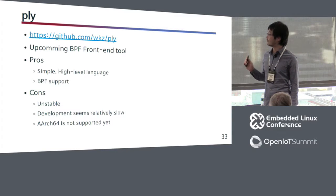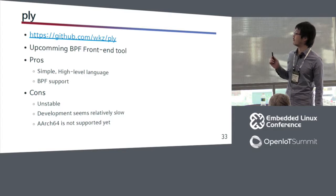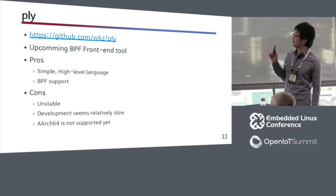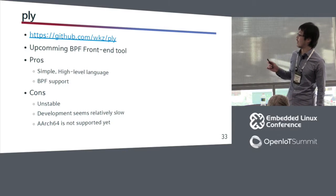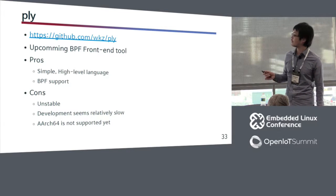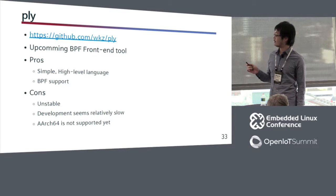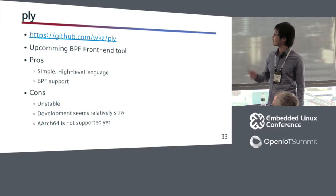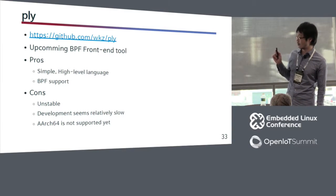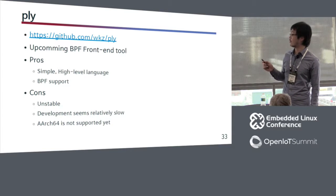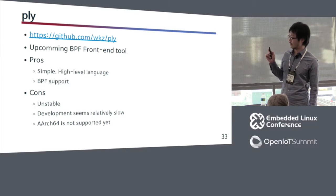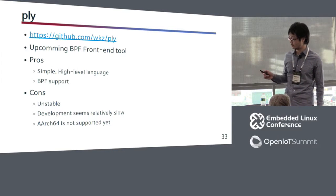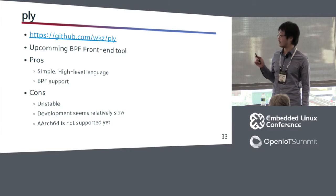Next is Ply. Ply is an upcoming BPF front-end tool and so far is the only tool with a high-level language and BPF support. But Ply is still in beta and relatively unstable. Its development seems relatively slow because of a single author. Also, AX64 is not supported yet, so it seems fairly far from practical use especially on AX64 platform — but it's still interesting.